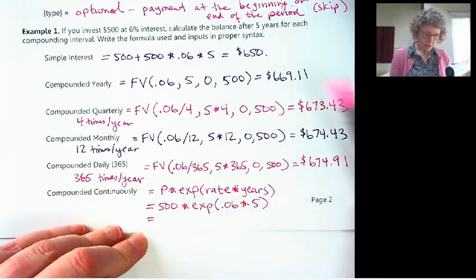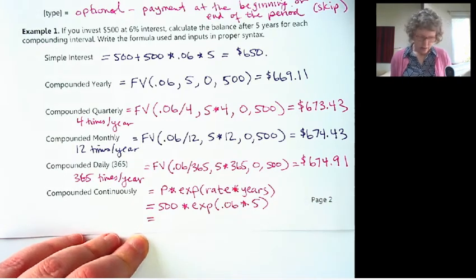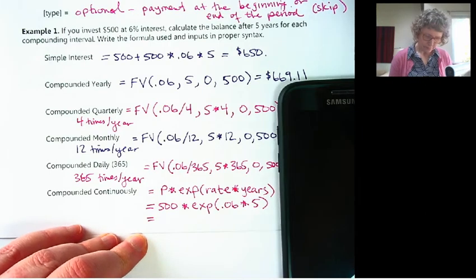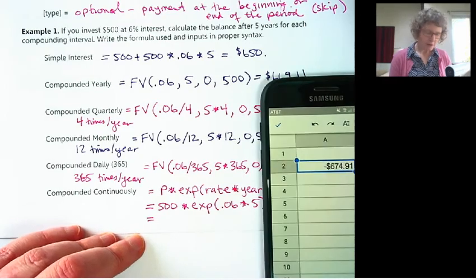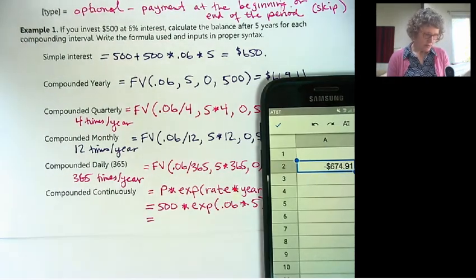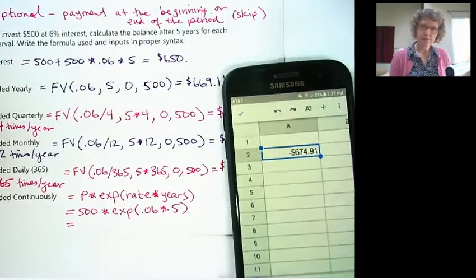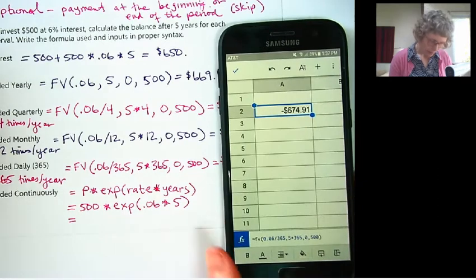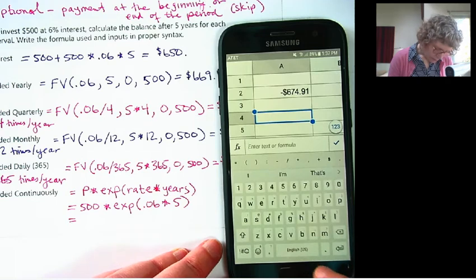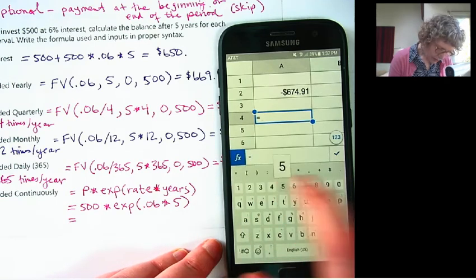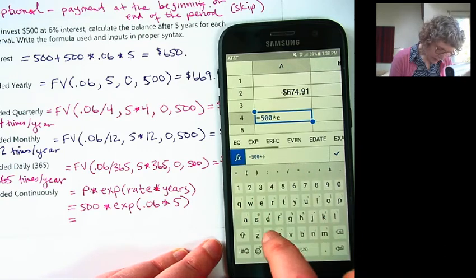Now this should have a bigger number. We should get more money by compounding more often. Let me go back. I'm using a completely different function this time, so I'm just going to go to a different cell. Scoot this over. I'm just going to click down here, go to a different cell.